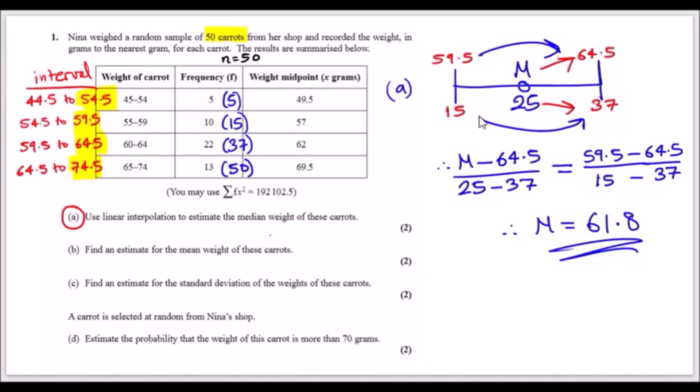Let's go. Nina weighed a random sample of 50 carrots, so n is 50, from her shop and recorded the weight in grams to the nearest gram. The results are summarized below. One thing to know about this histogram is that we have continuous data.